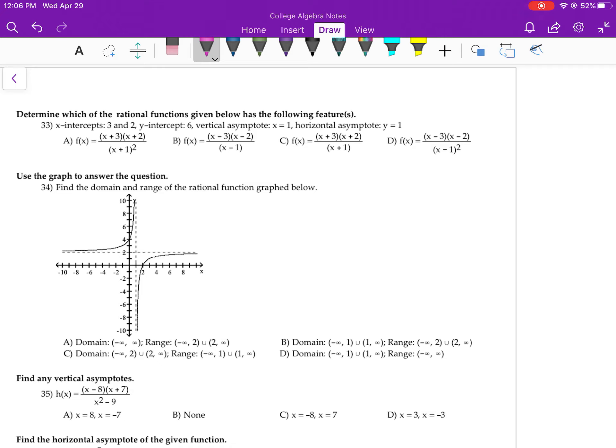Number 33. If my X intercepts are 3 and 2, then that means they're coming from the numerator. And so the answer is not A and it's not C. If the Y intercept is 6, then that's the result of having X equal to 0. So that's still either B or D. The vertical asymptote is 1, so that could still be either B or D. If the horizontal asymptote is 1, that means I have the same degree on top as I do on the bottom.